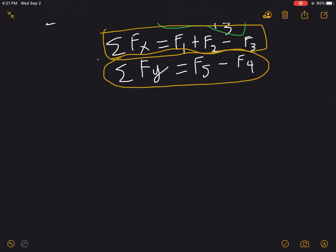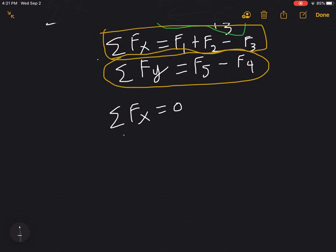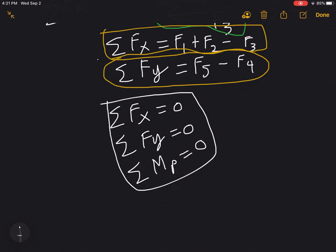The equations that we're going to be needing for solving our problems are called equilibrium static equations. That is summation Fx equals 0, summation Fy equals 0, and summation moment along a point equals 0. So our problems will be solved using these equations.